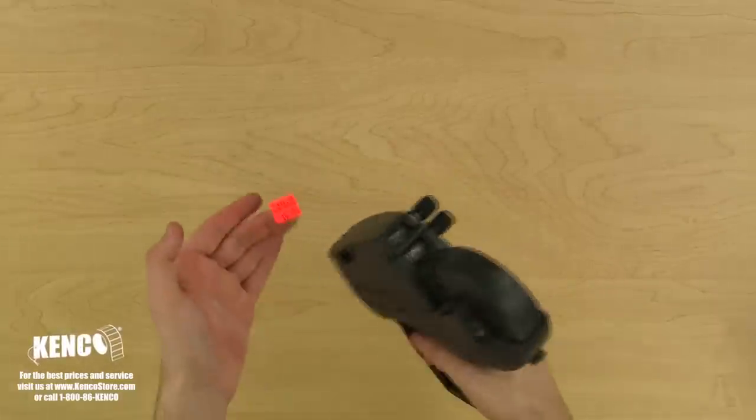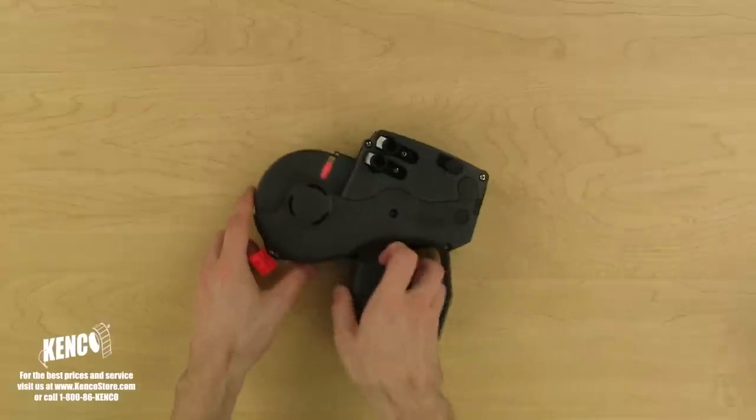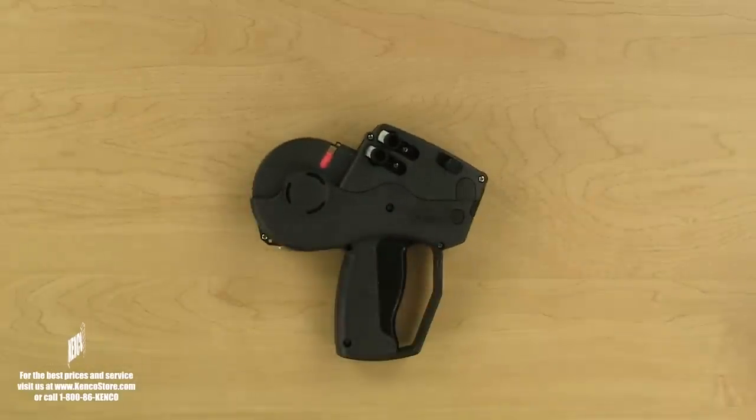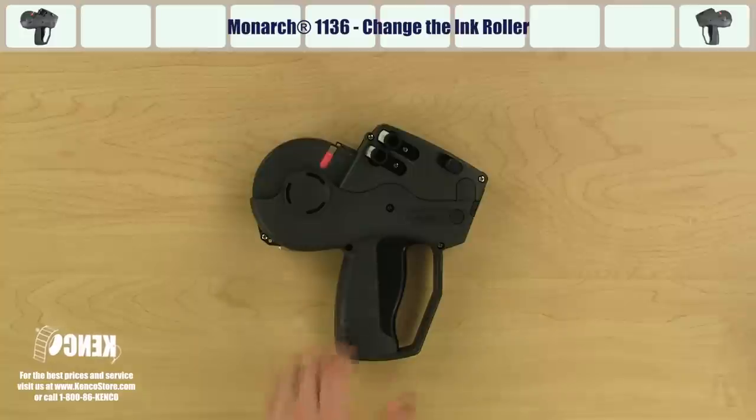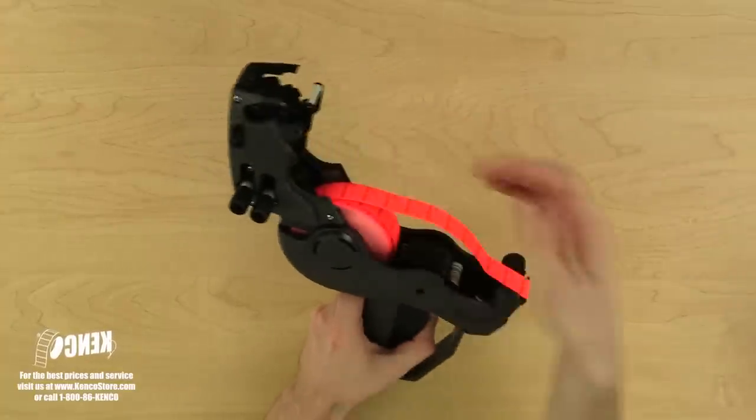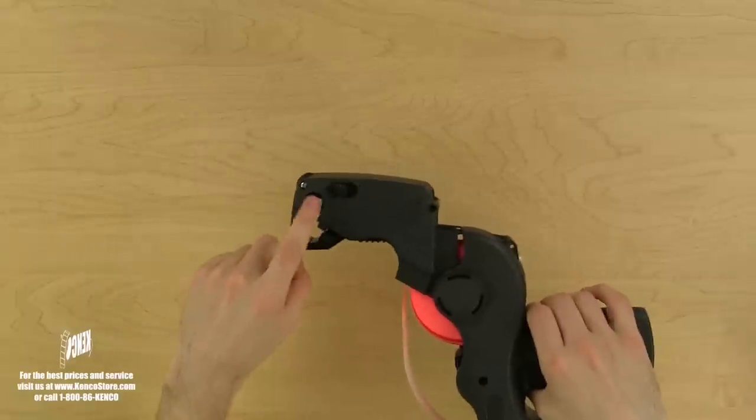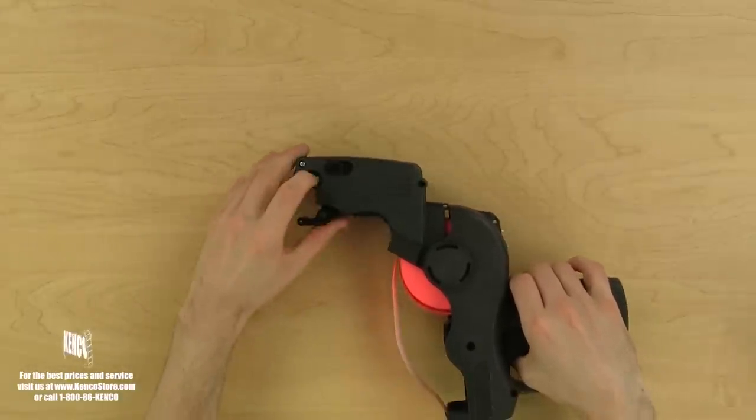Now that we know how to properly load and adjust the Monarch 1136 label gun, let's learn how to change the ink roller. The first thing we need to do is open the label housing cover. To release the old ink roller, let's press the white button on the side of the ink roller rod. The ink roller should pop right off.